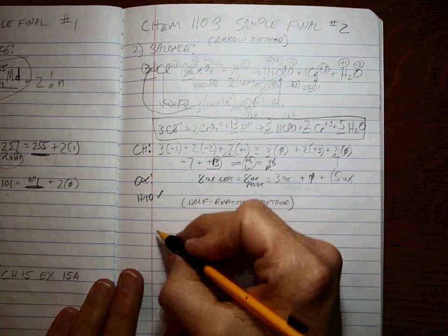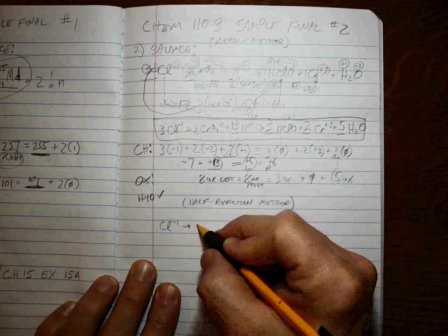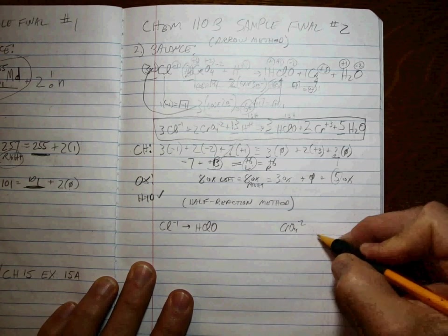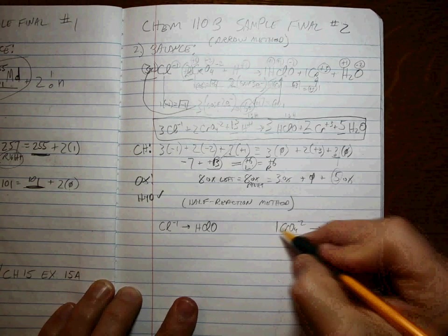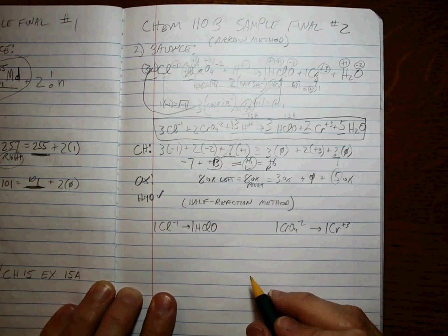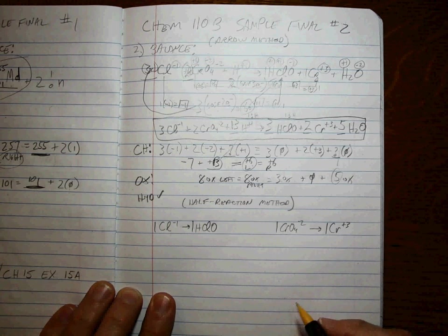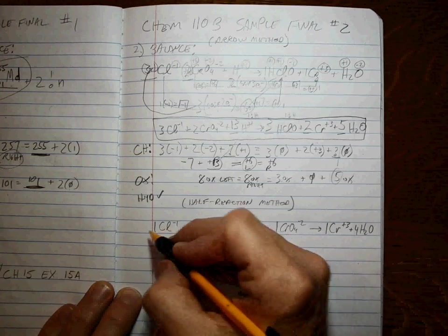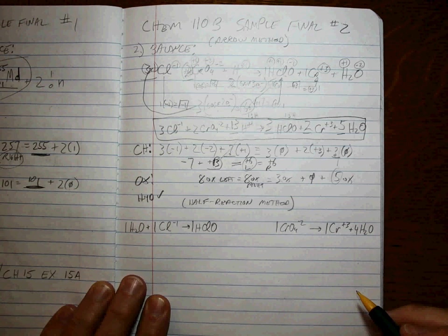Now, let's do the half-reaction. Split them up into their two halves. Cl minus one goes to HClO. And then CrO4 minus two goes to Cr plus three. Alright. One to one between the chlorines and the chlorines. Then what? Then we add waters to balance the oxygens. Four H2O. Then one H2O.